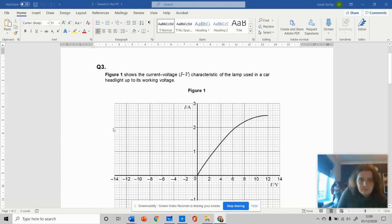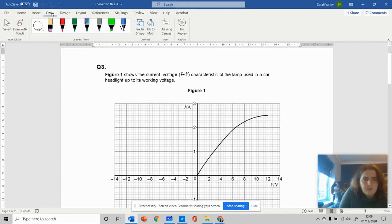I've got a current-voltage graph for a lamp used in a car. When I see a graph with current and voltage, before I even read the question, I look at the axes. Current is on the Y-axis and voltage is on the X-axis.